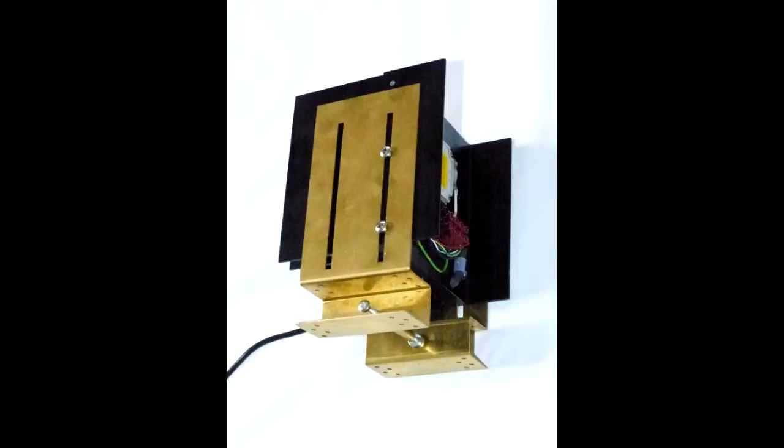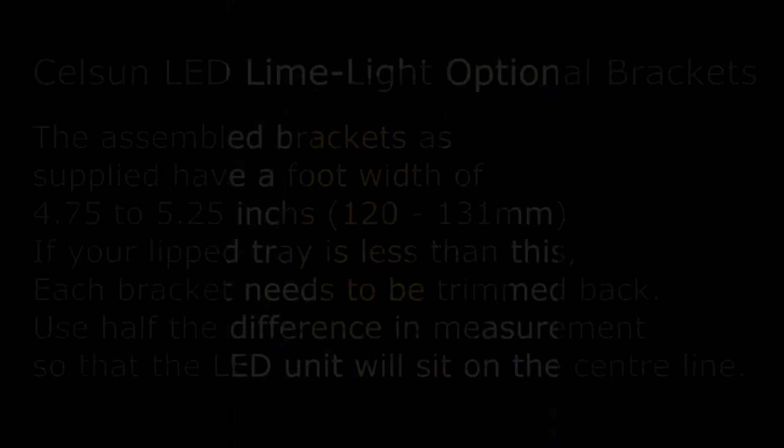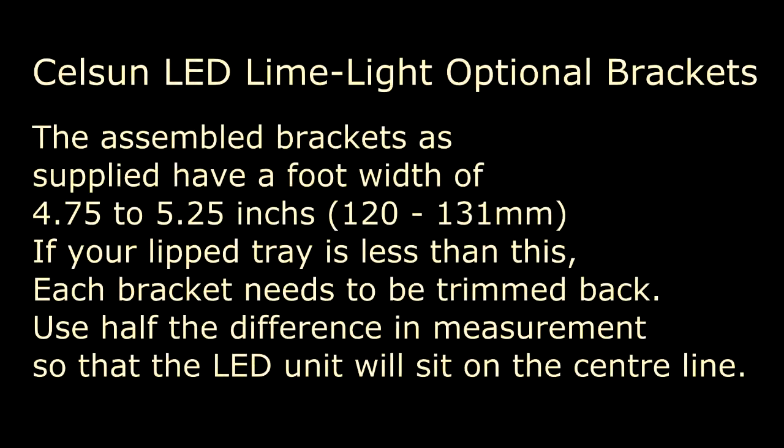Now the feet at the bottom are designed to engage in the lip of the lantern tray. Marked on the bottom of the feet are score lines at quarter inch intervals, and these have been put there as a guide to cutting.